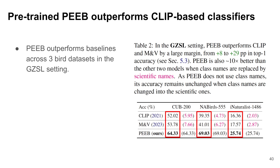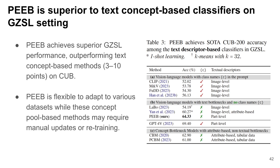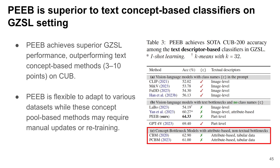The reliance on class names suggests CLIP was exposed to them during pre-training, so we compare PIP with CLIP-based classifiers in a GZSL setting for a fair comparison. PIP was pre-trained on the Bird-11K dataset where images from CUB test sets are excluded. PIP outperforms CLIP and MNV methods across three datasets by a large margin, especially when scientific names are used. PIP also outperforms all explainable methods ranging across three groups: vision-language models with class names in the prompt, vision-language models with text bottlenecks and no class names, and concept bottleneck models with attribute-based non-textual bottlenecks. We also tested GPT-4V by prompting with an input image and part-based descriptors of 200 classes. PIP's accuracy is slightly lower than GPT-4V, but is able to provide grounded information and accurate bounding boxes.